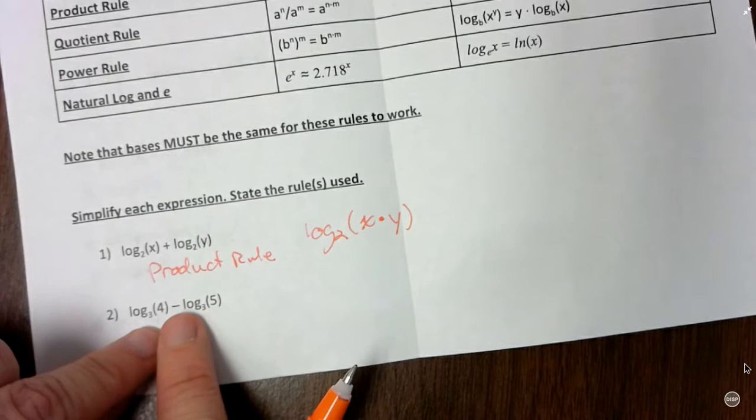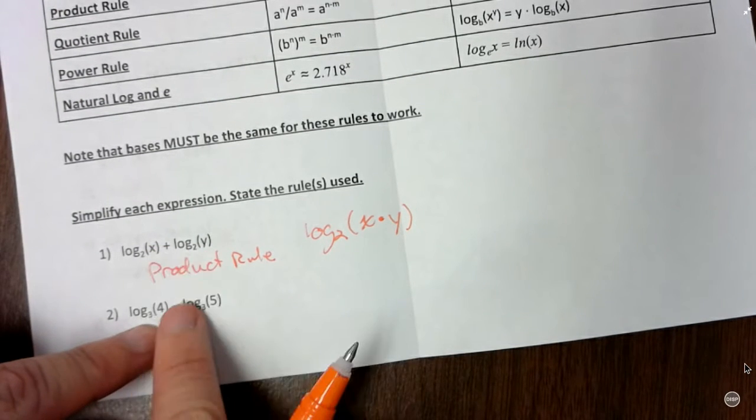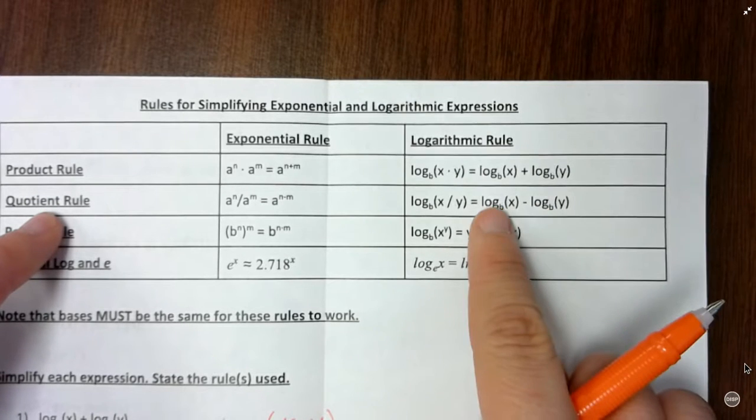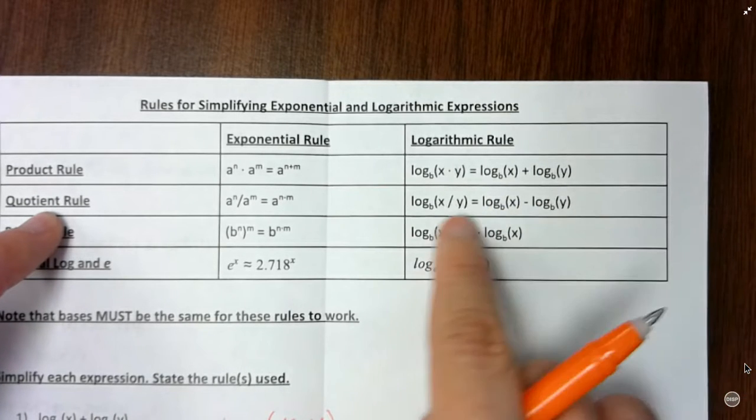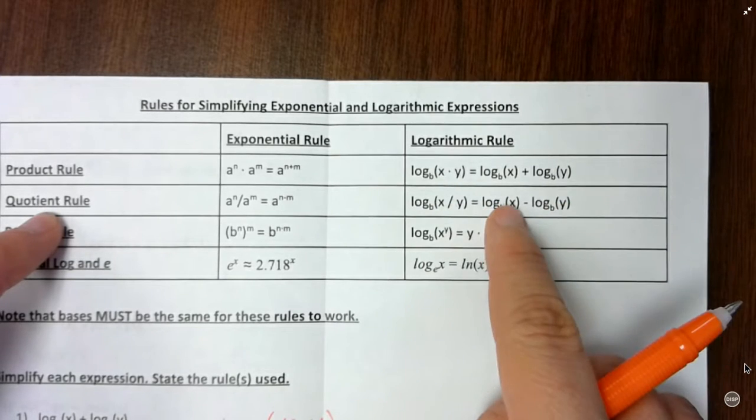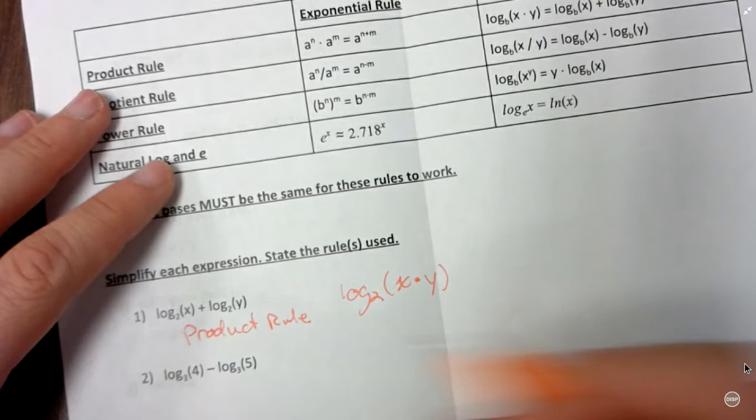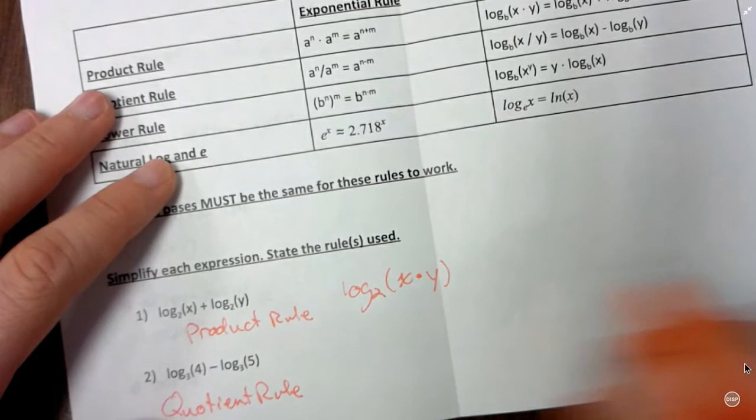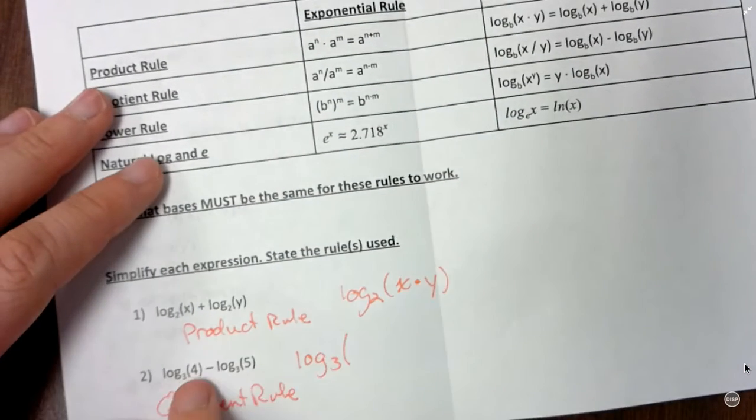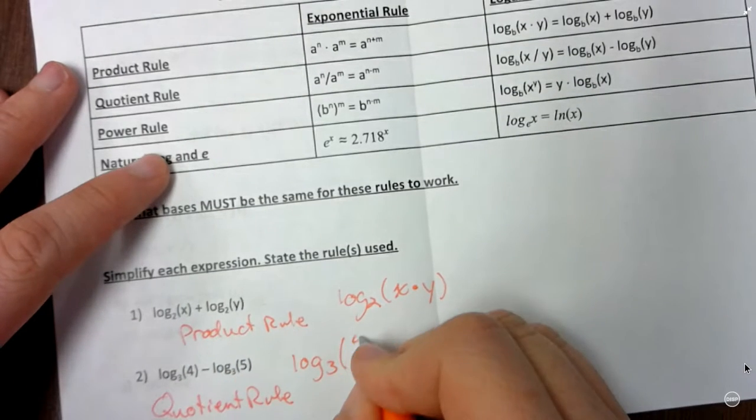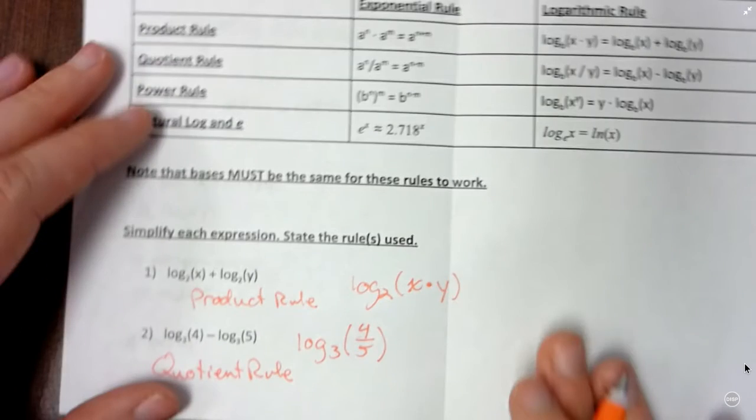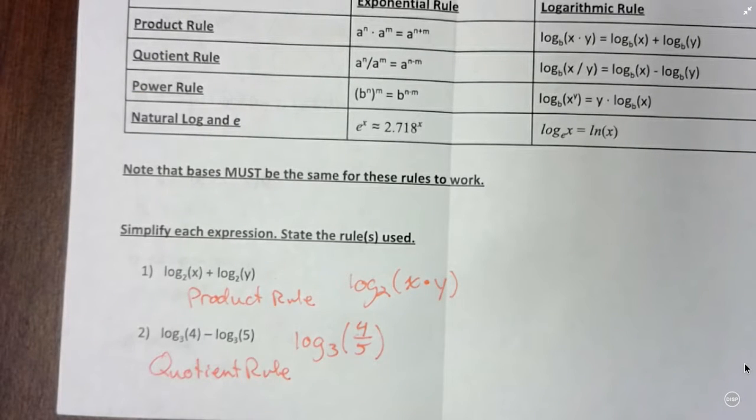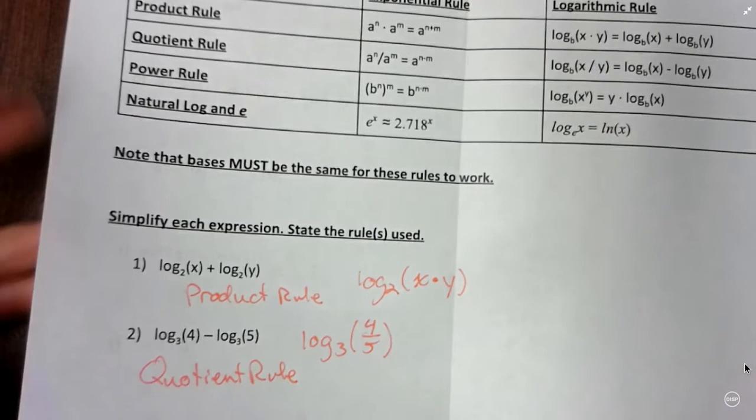So then check out number 2. Pretty similar, except I'm not adding two logs, I'm subtracting two logs. So looks like I'll be using quotient rule. See, because this shows a log minus another log. And it says I can combine them by dividing the arguments. So instead of x times y, I'm going to take x divided by y. So quotient rule. And then I have log base 3 and then I'm going to take 4 divided by 5. And then my two logs are combined into one, and I'm finished.